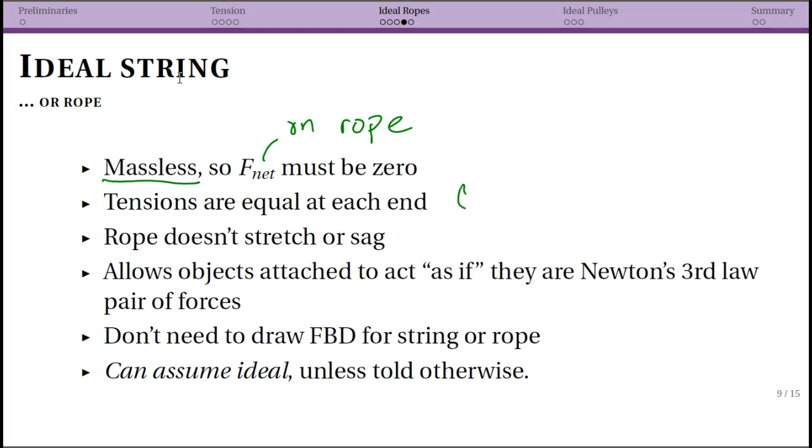Again this is because it's ideal and we are assuming that the rope doesn't stretch or sag. This is just hard, you don't want to do this, and so we're now simplifying down and saying that objects attached to each end of the rope or the string are acting as if they are Newton's third law pair, and remember we use that neat dashed line to do that.